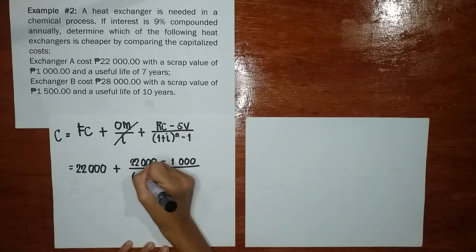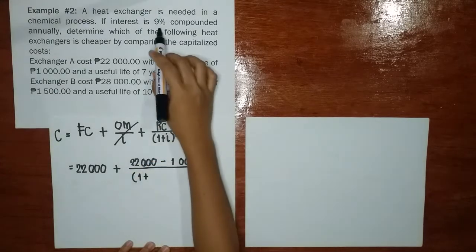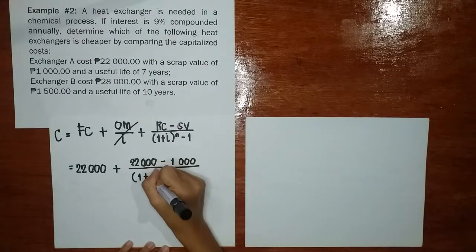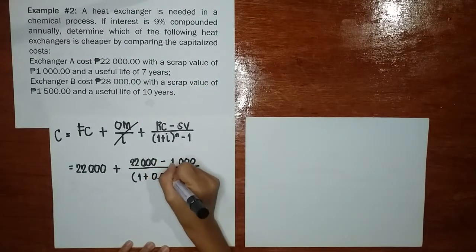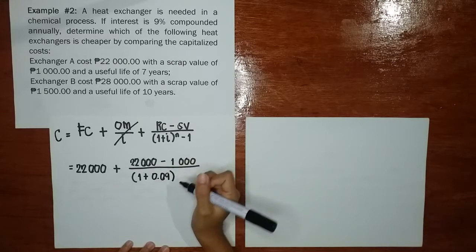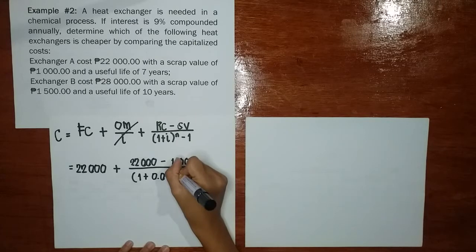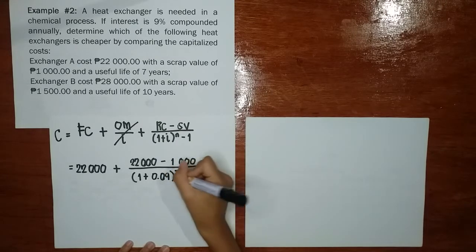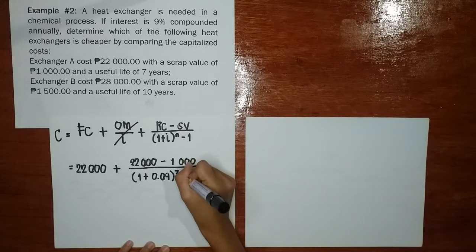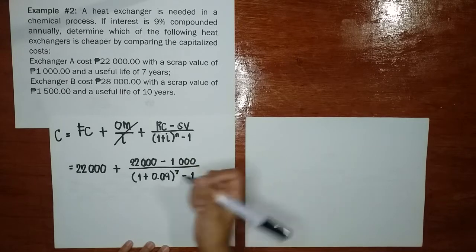So divide by 1 plus, ilang percent? We have 9 percent. So plus 0.09. Raise to, ilan ang useful years niya? So you have 7 years. So ibig sabihin, tatagal siya ng 7 years. Minus 1.